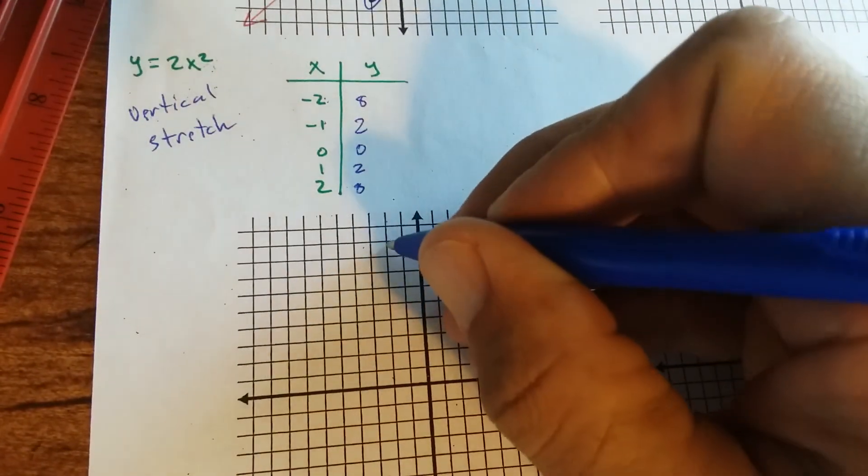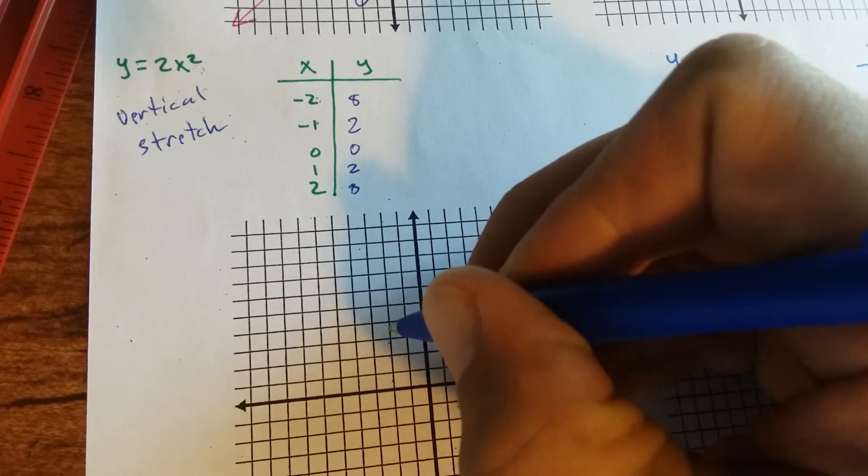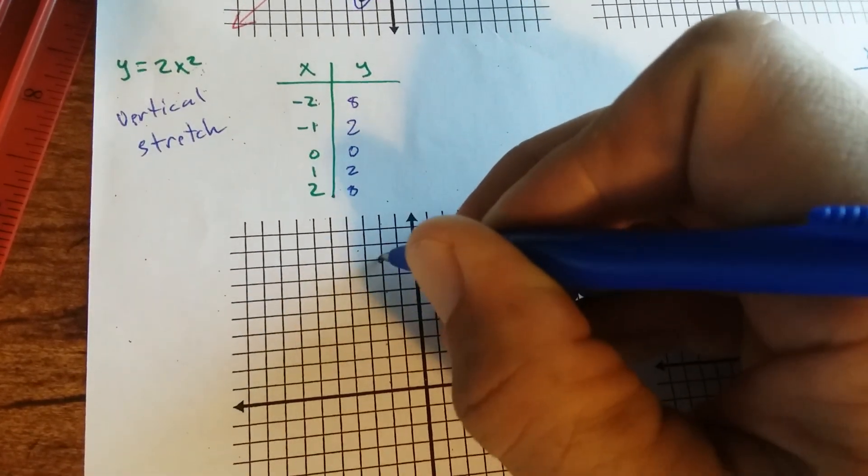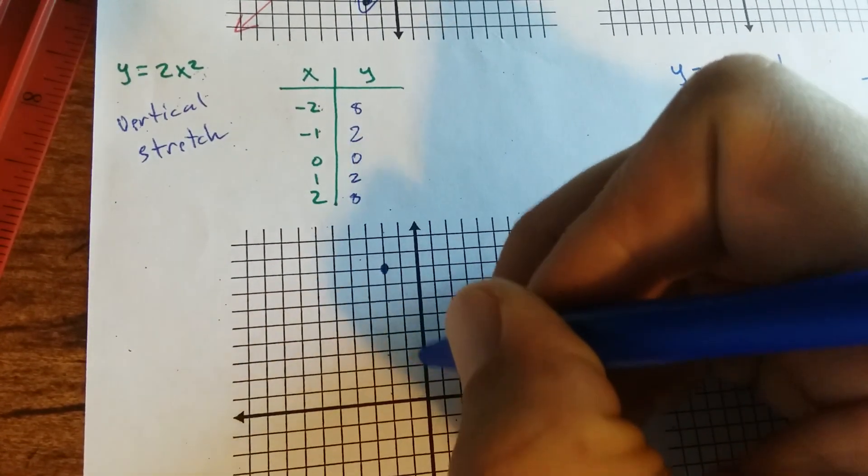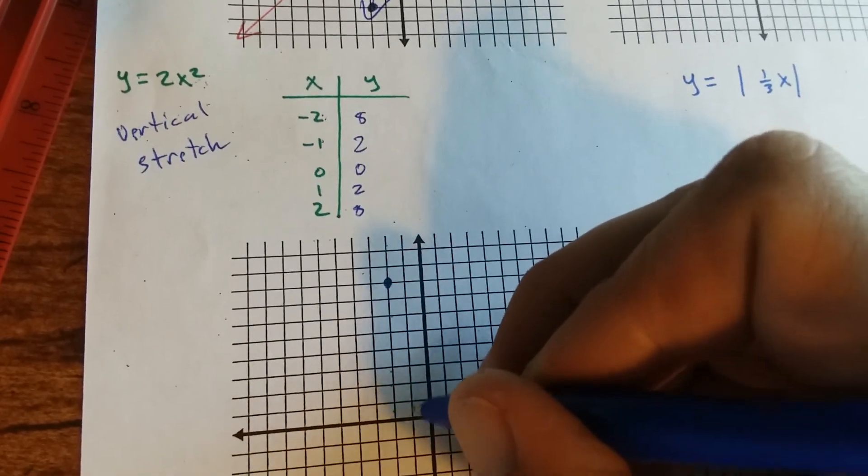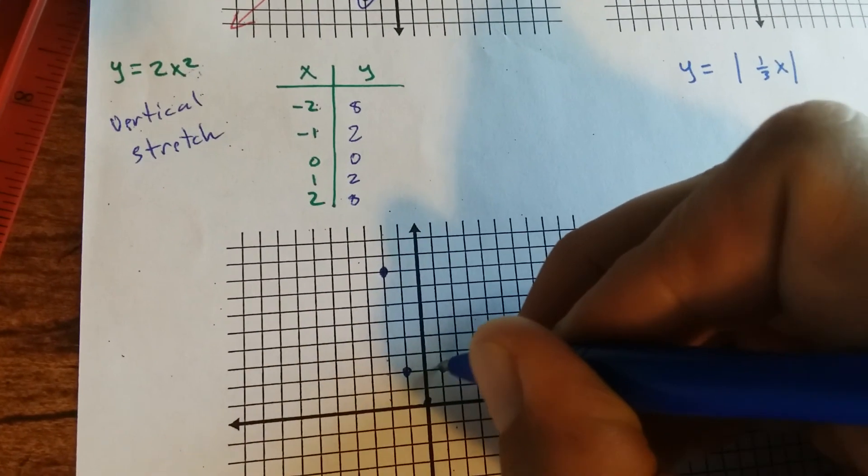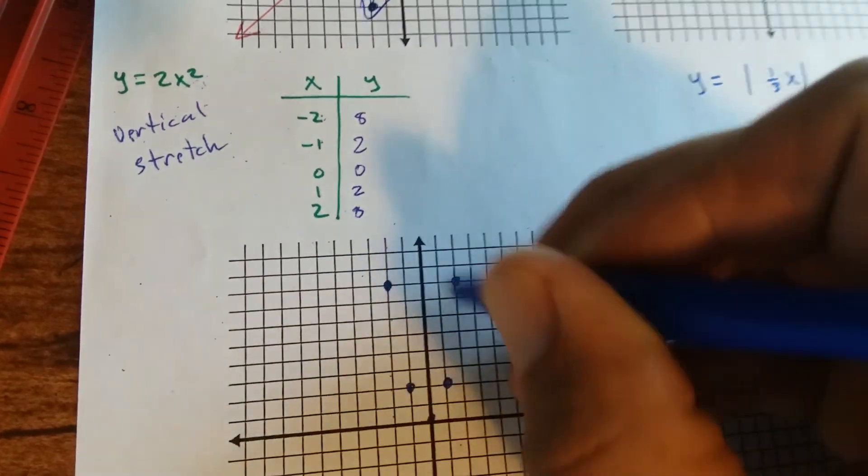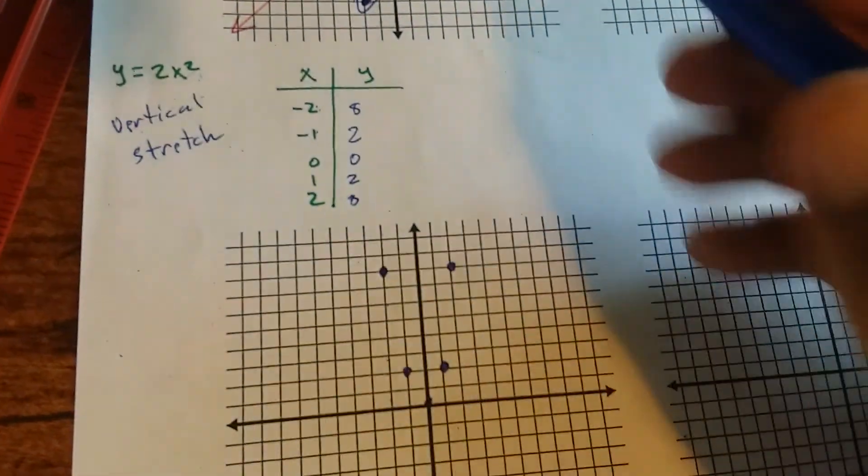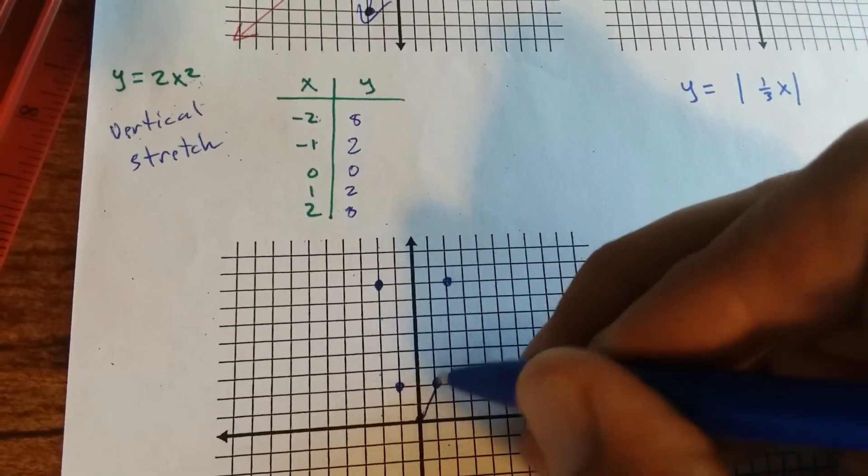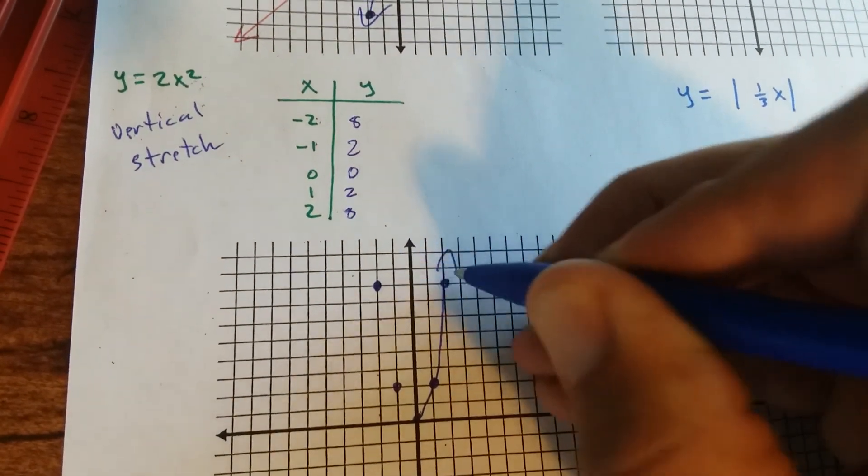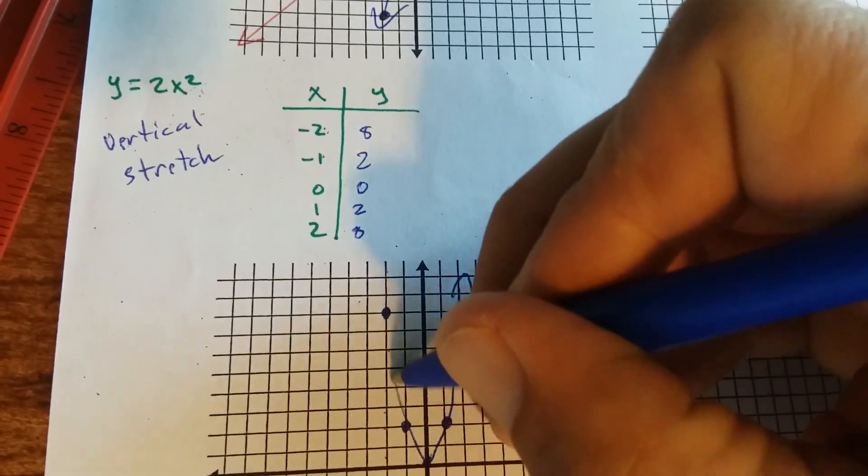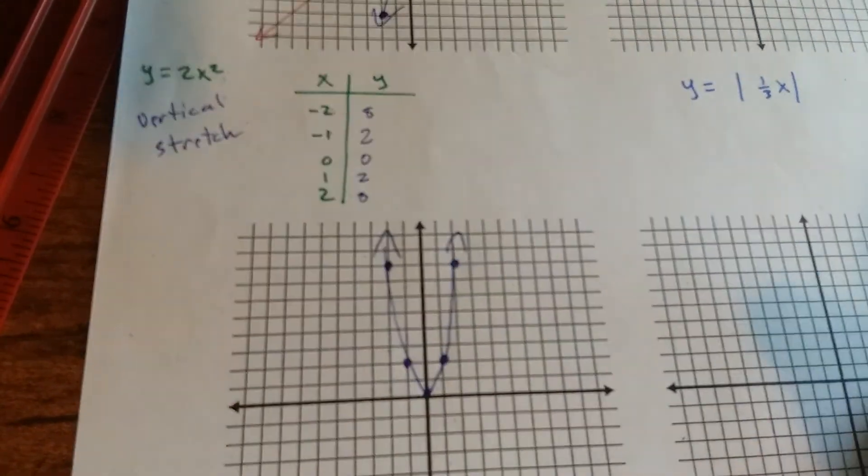So we plot our points. Negative 2, 8. 1, 2, 3, 4, 5, 6, 7, 8. Negative 1, 2. Plot your points and then connect your dots. Notice this is a parabola because it is a quadratic function. It's to the power of 2. So it's going to be a U shape.